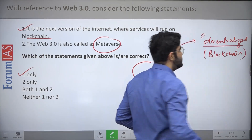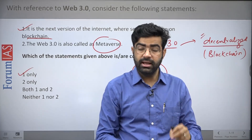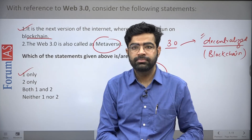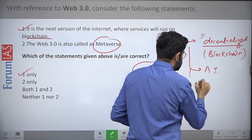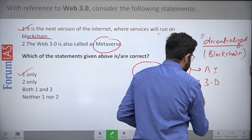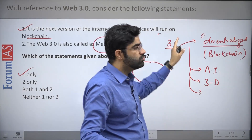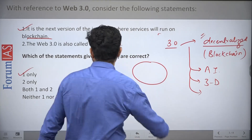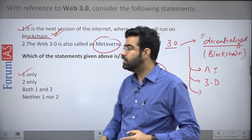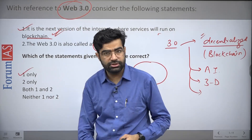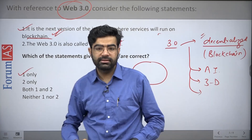In Web 3.0, the core concept is decentralization — your data is decentralized and how to utilize it depends on you. This is the core concept of blockchain technology. Additional concepts in Web 3.0 include artificial intelligence, 3D elements, and the ubiquitous nature of the internet, meaning everyone can access it. This future technology runs with the help of blockchain.